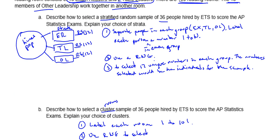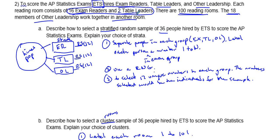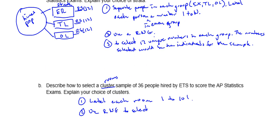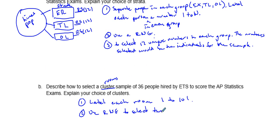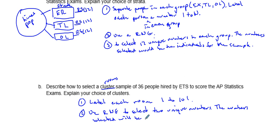Since each room has 18 people and we want 36, we need to select just two rooms. We would use a random number generator to select two unique numbers from 1 to 101 — unique so there are no repeats. The rooms corresponding to the numbers selected would be the individuals we will sample. So the steps are: label rooms 1 to 101, use a random number generator, and select two unique numbers — giving us our 36 people.